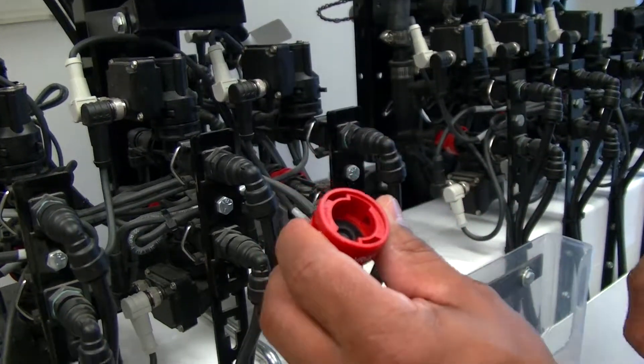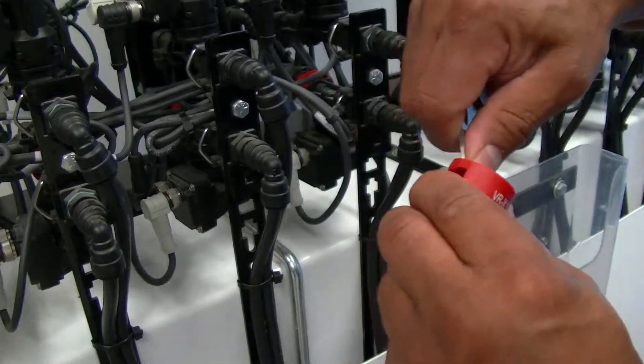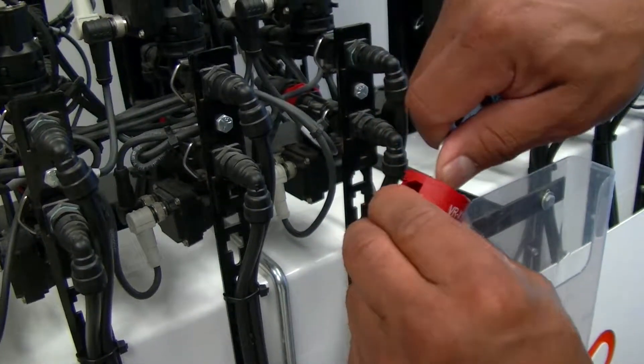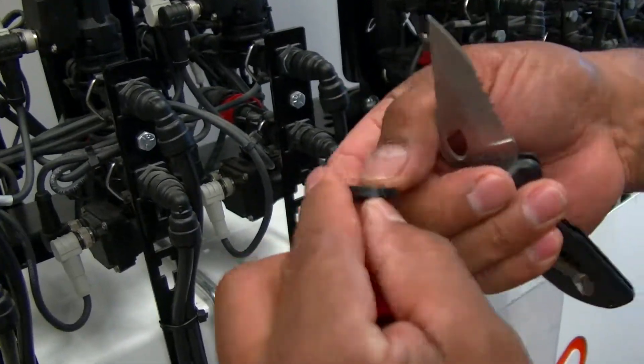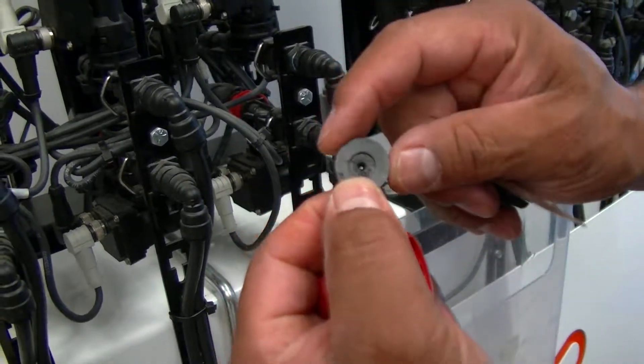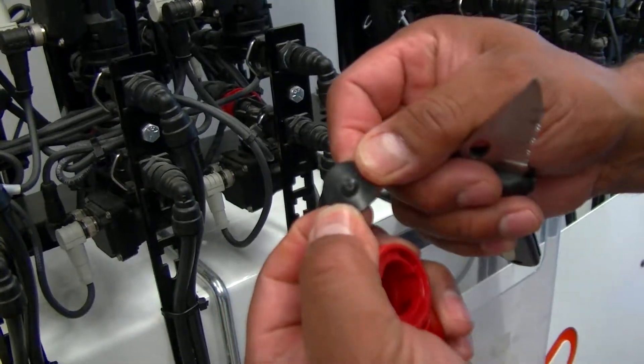Basically what that orifice is, if we take a look at the orifice inside here, you can see it's a tiny rubber gasket that expands with pressure.